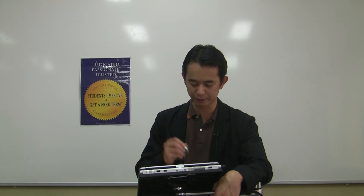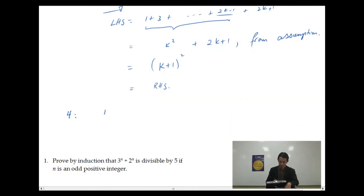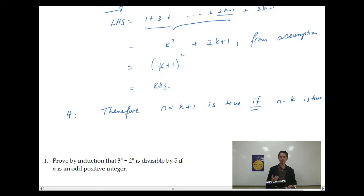In consolidating our assumption, remember what I told you in terms of the analogy: we will use step 1 and step 2 as a recursive step to prove that step 2, our assumption, is actually true. So we summarize step 2 and step 3 first. We know that n equal k plus 1 is true if n equal k is true. That is the finding from step 2 and step 3.